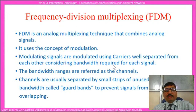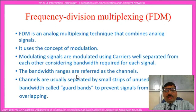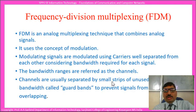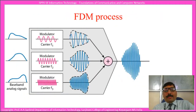In frequency division multiplexing, the modulating signals are modulated with carriers having different frequencies. The bandwidth ranges for each carrier and its associated modulating signal are referred to as the channels. Between these channels there is usually a small gap called guard bands, to prevent the signals from overlapping. We shall see this in detail. So this is the process of frequency division multiplexing.